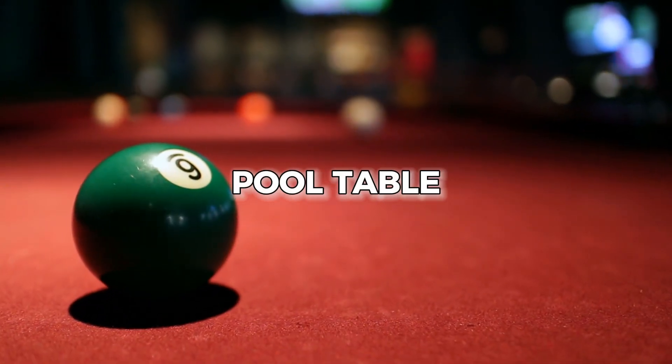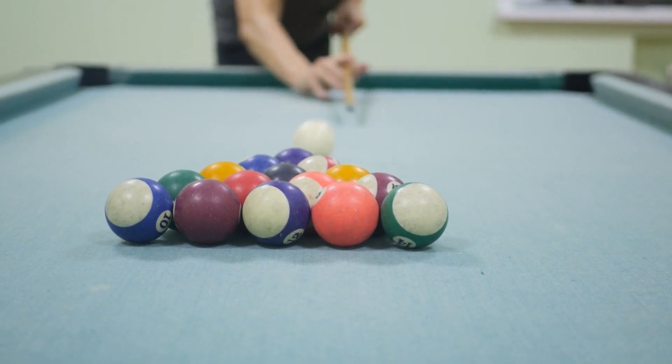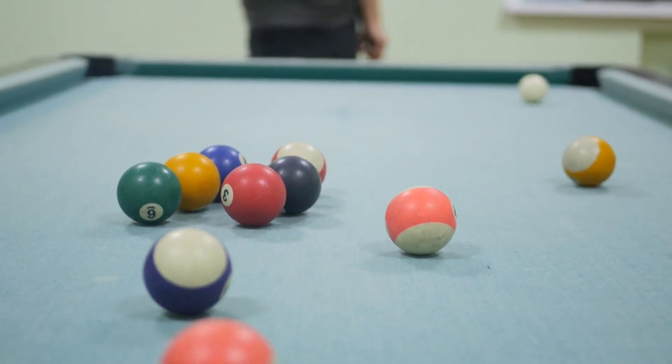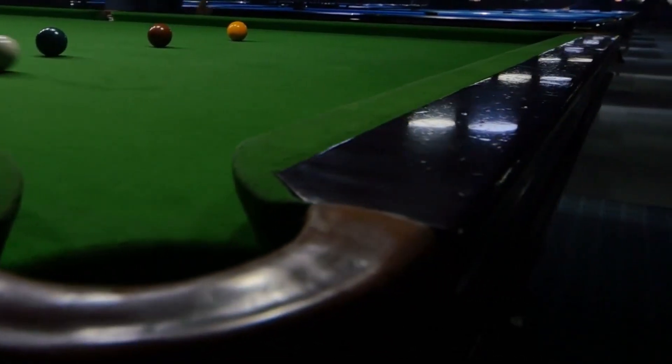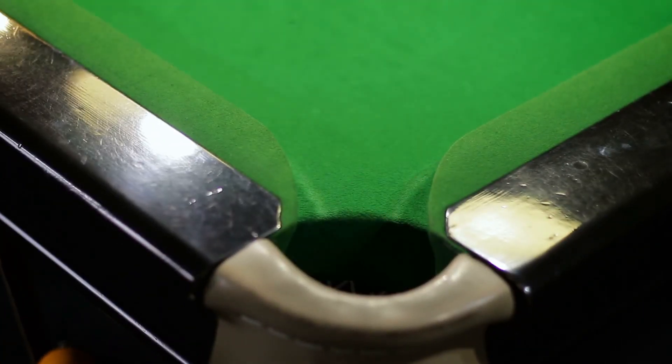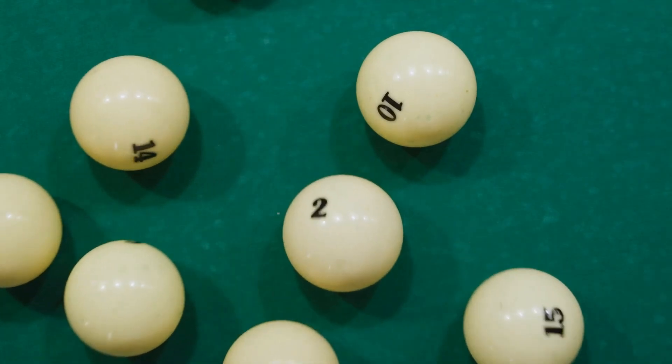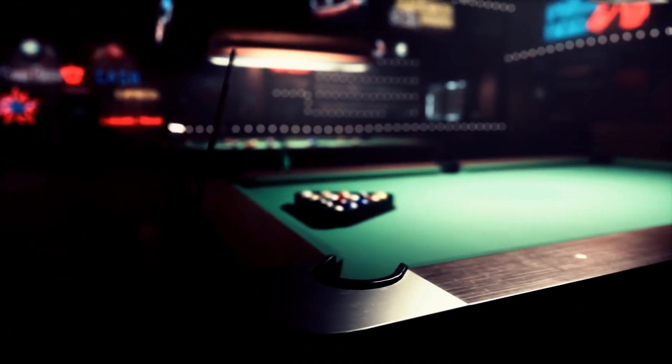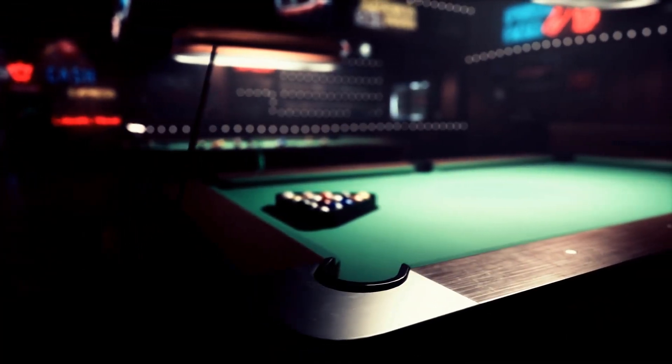Imagine you're at a pool table watching a game. The balls are set up perfectly and the player takes aim. But instead of scattering randomly, they all miraculously head for the same pocket. What would you think? Luck? Skill? Or maybe you'd start wondering if something fishy is going on with the table.